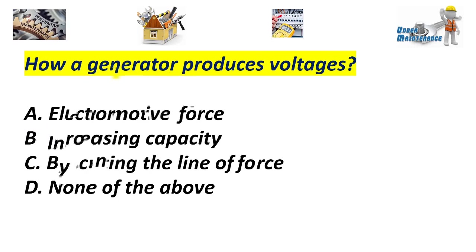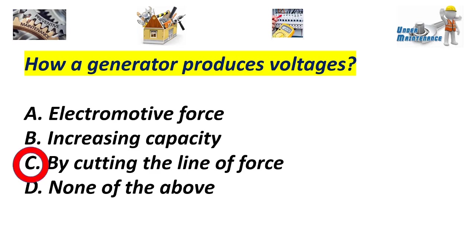How does a generator produce voltage? A. Electromotive force. B. Increasing capacity. C. By cutting the line of force. D. None of the above. Answer: C. By cutting the line of force.